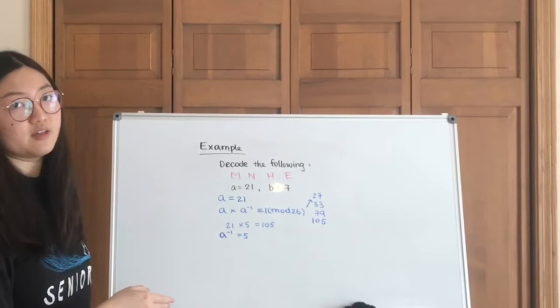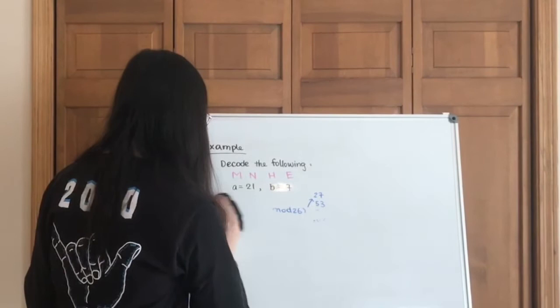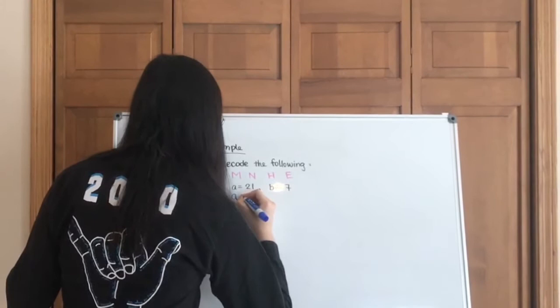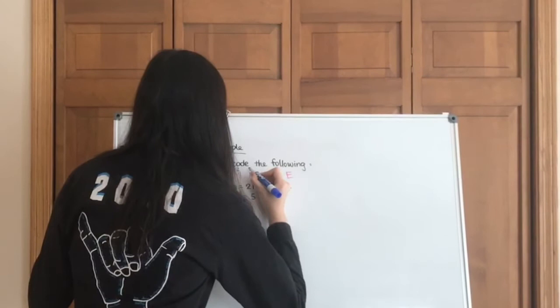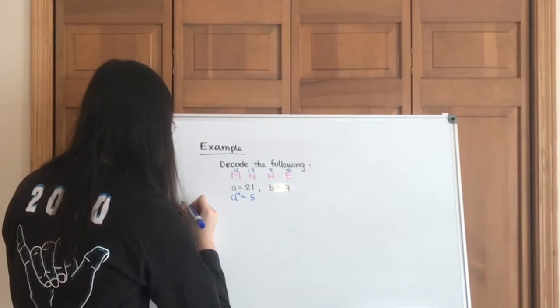So this is what we're going to multiply by after we subtract the number with 7, which is the b value. So I'm going to erase this to give myself more room, and I'm going to note down here that a inverse is 5. So the next step, we're going to put these letters into numbers. So 12, 13, 7, 4.